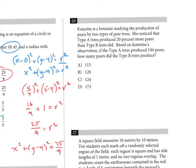Number twenty-six: type A trees produce 20% more pears than type B trees. If type A produced 144 pears, how many did type B produce? Type A is 120% of type B, so 144 equals 1.2 times type B. Dividing: type B equals 144 divided by 1.2 equals 120 pears.